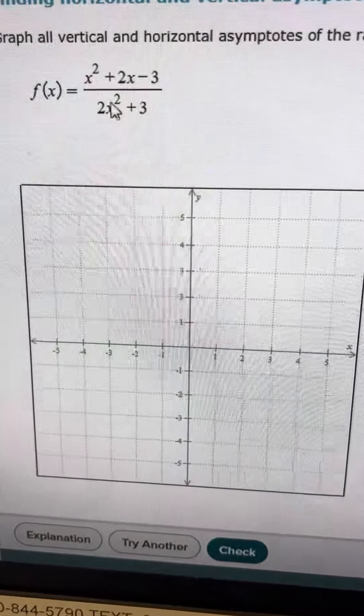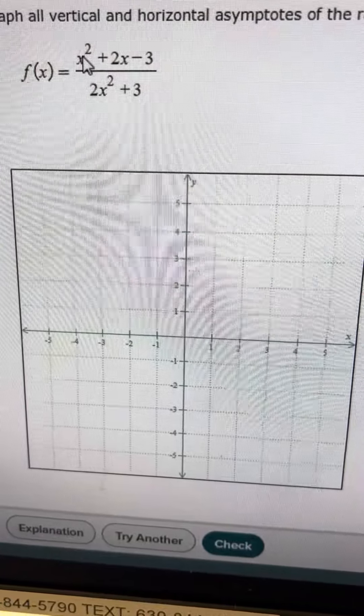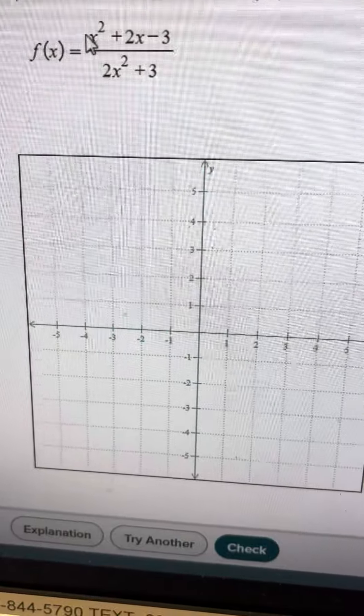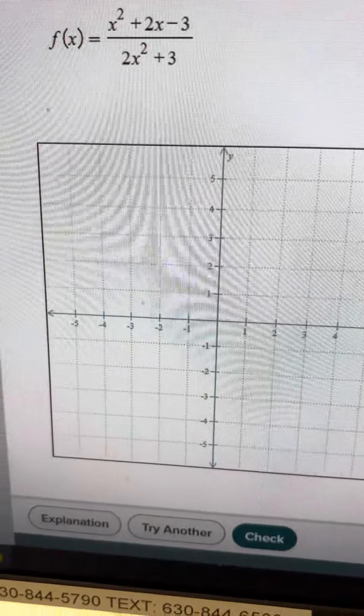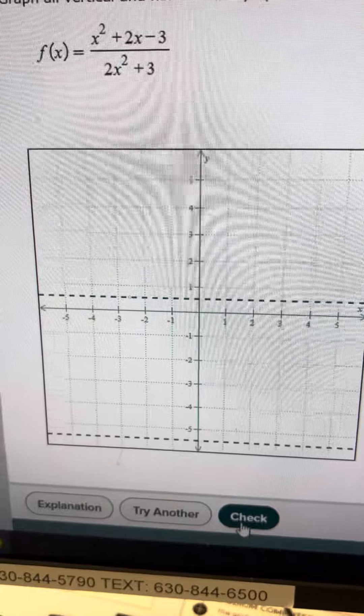so no vertical asymptote, but here we have a degree of 2 on the top and the bottom, so that means you're going to have a horizontal asymptote. Since both degrees are equal, you'll have a horizontal asymptote at 1 over 2 because you just divide the leading coefficients. So we'll make our horizontal asymptote at a half. That should be the correct answer.